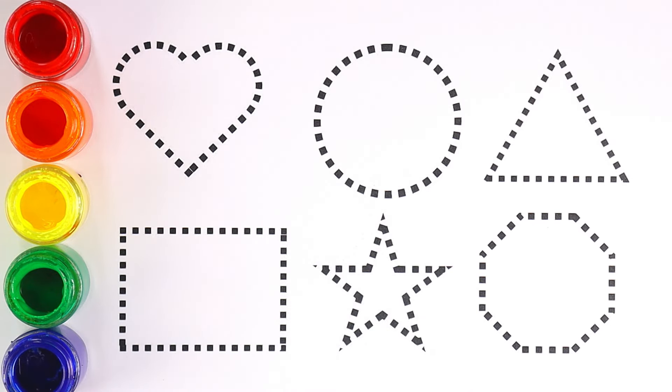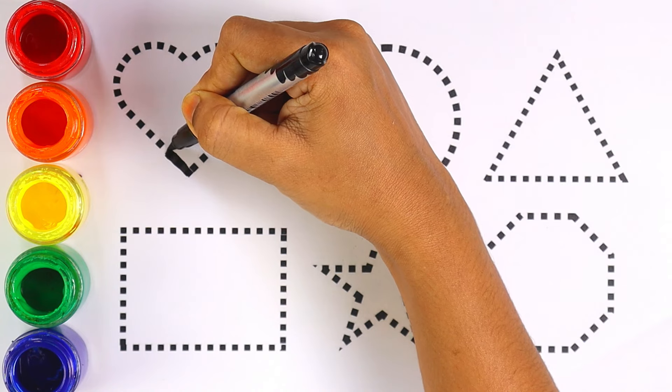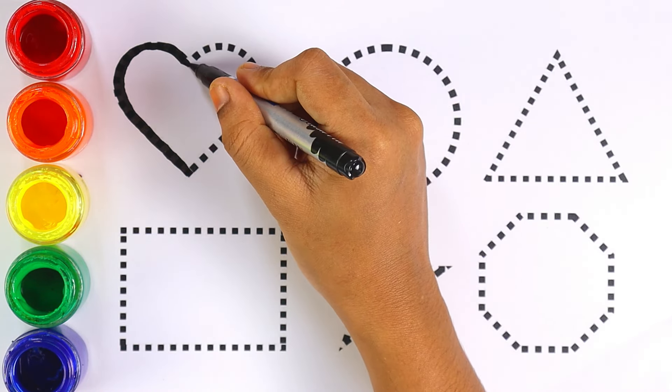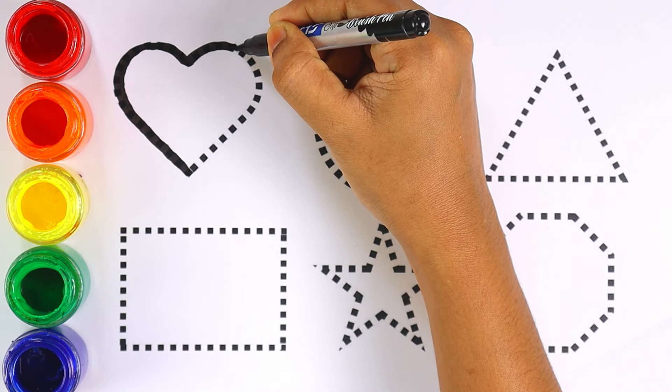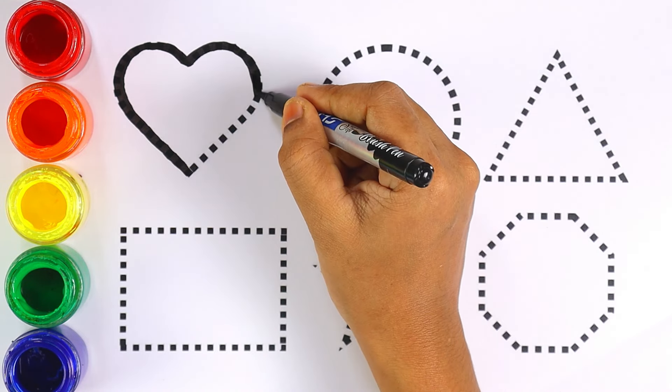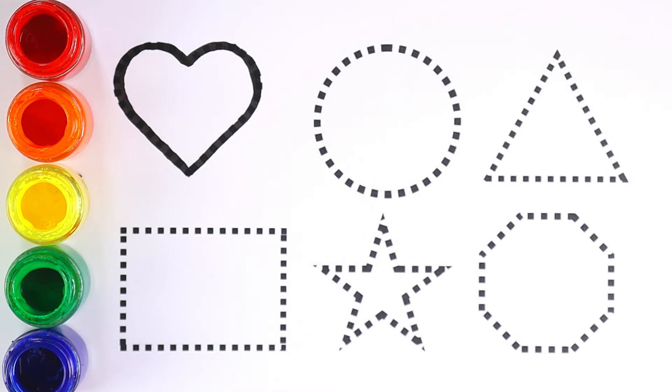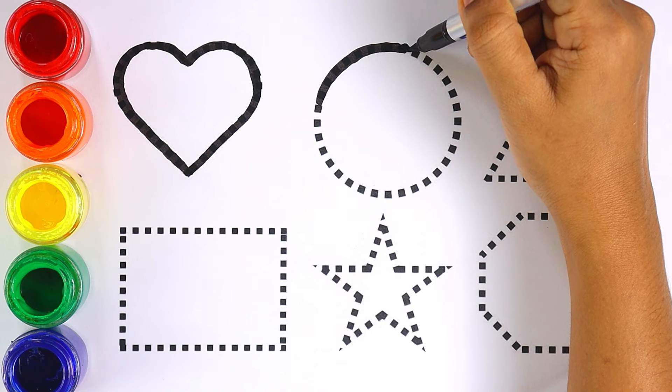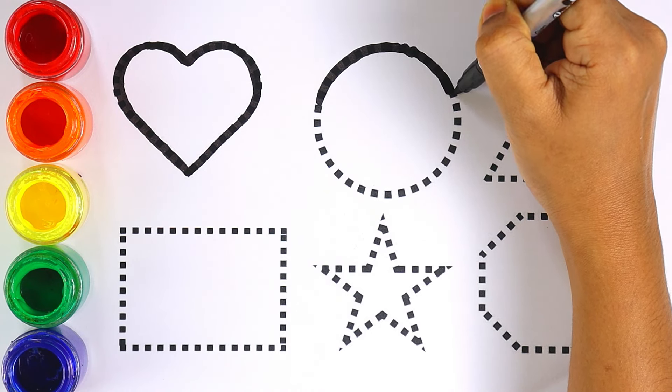Now let's start drawing shapes. I am drawing heart shape. Kids, can you repeat after me? Which shape is this? This is heart shape. Let's move on to circle. This shape is called circle.